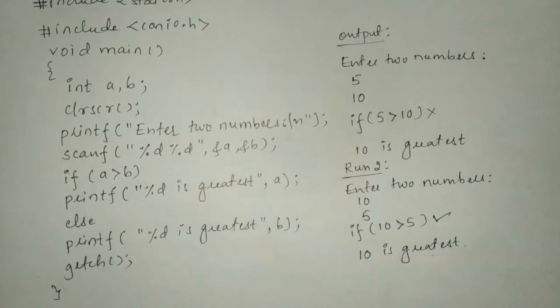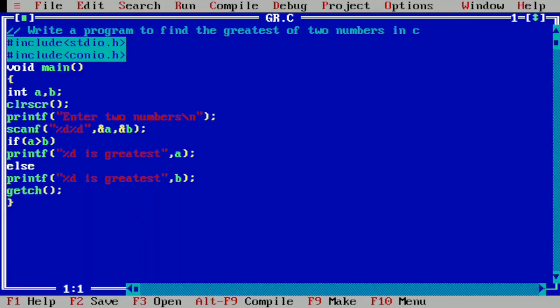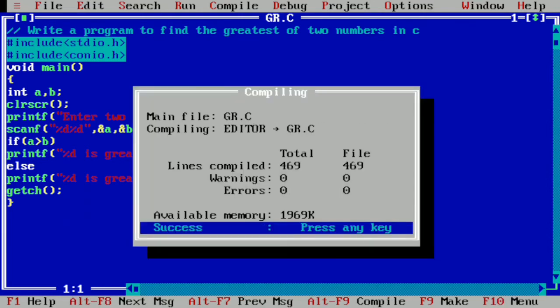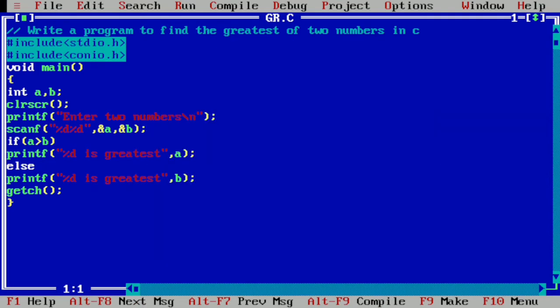Now let us execute this program. For that I will take you to my laptop screen. Here you can see I have already written this program to save your time in Turbo C++ compiler. Now let us compile this program by pressing Alt F9. Here you can see it is showing success. There is no syntax error and I am going to press Enter.